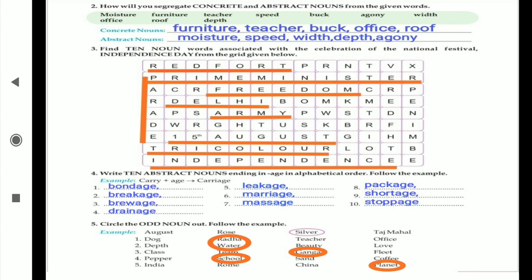Which is the different one? Radha, because dog, teacher, and office are common nouns and Radha is a proper noun. Next one: depth, water, beauty, and love. Why is water the different one?